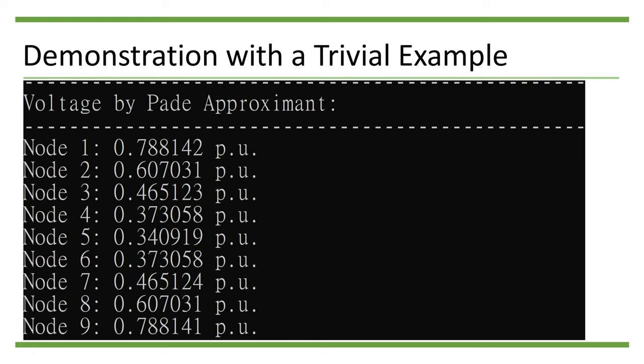The Padé approximant converges to the high voltage solution faster than the direct summation whenever such solution exists, but it may still converge even when a high voltage solution does not exist.